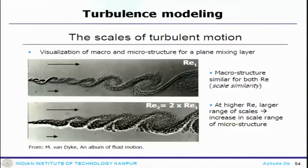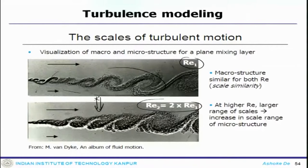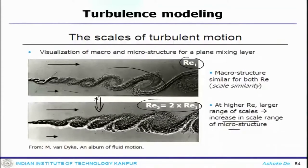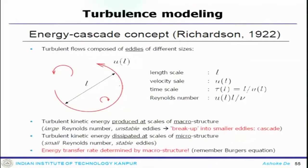Looking at the scales at two different Reynolds numbers — the micro structures look quite similar in both situations, but at high Reynolds number you have a larger range of scales. Turbulent flow field is a mixture of macro and micro structures, or eddies and vorticity of different sizes. The maximum characteristic length of an eddy can be defined based on your geometry — for a channel, it would be the channel diameter. So you define length scale L, velocity scale U_L, time scale, and the Reynolds number.